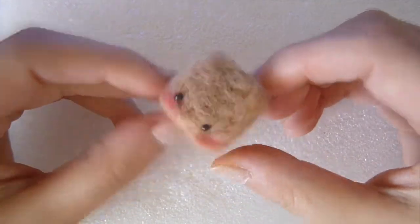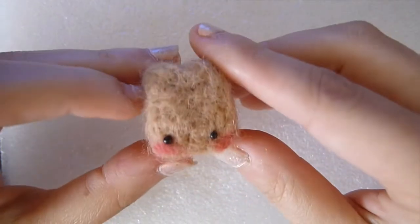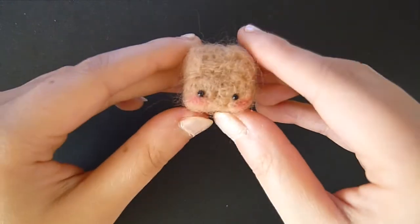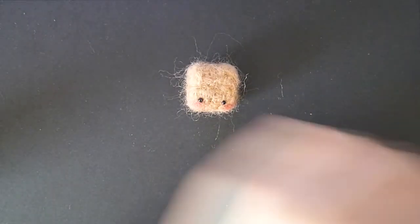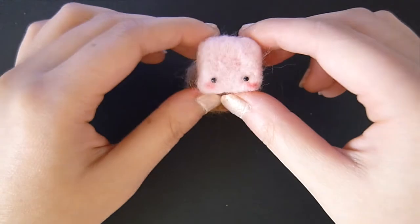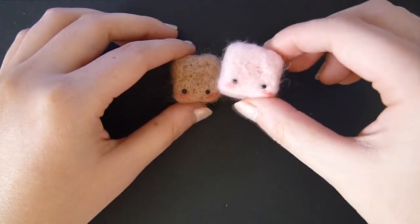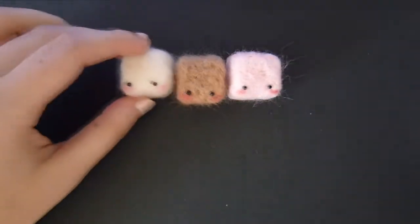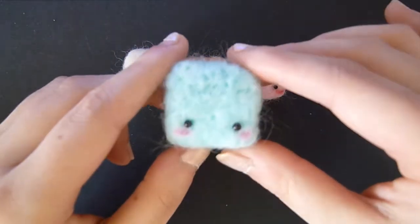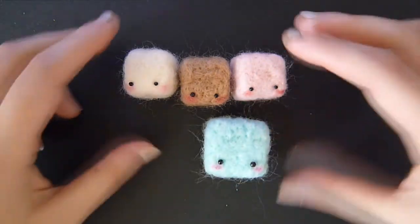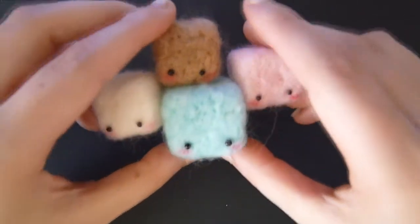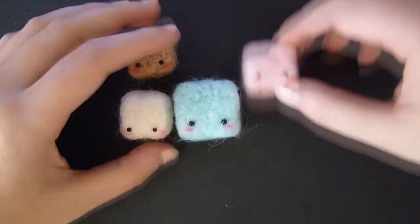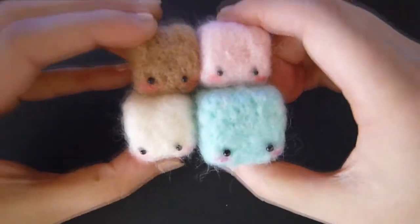Now my chocolate cube is done. You can definitely use other colors. As you see, this is the one I just showed you. And I also made a pink one. I also made a white one. The white one actually looks like a marshmallow or a sugar cube. And now I made a blue one. You see how the pink and the blue one is the cotton candy color. They are so adorable and you can put them in a cup or a box as a decoration.